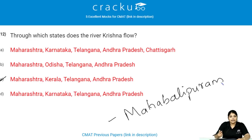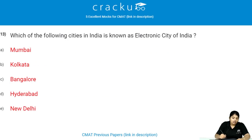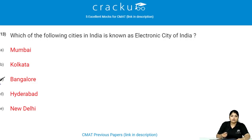Which of the four cities in India is known as the Electronic City of India? Bangalore is known as the Electronic City of India. It is also known as the City of Gardens.